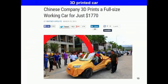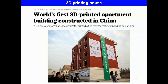There are also examples where a complete car has been 3D printed - a Chinese company which 3D prints a full-size working car and the cost is about $1,800 only, with integrated sensors and electronics. Another example is the world's first 3D printed apartment building, constructed in China - a company successfully 3D printed a 5-storey apartment building.